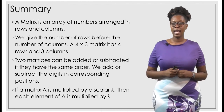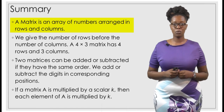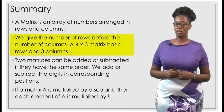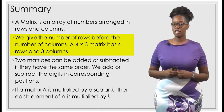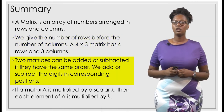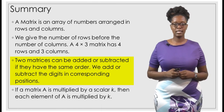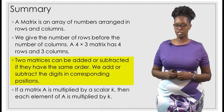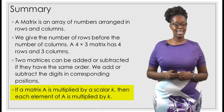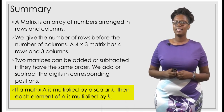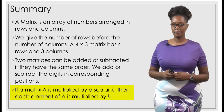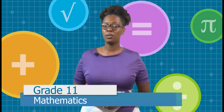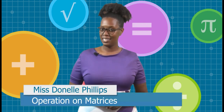To summarize today's lesson: a matrix is an array of numbers arranged in rows and columns. We give the number of rows before the number of columns, so a 4 by 3 matrix has 4 rows and 3 columns. Two matrices can be added or subtracted if they have the same order, adding or subtracting digits in corresponding positions. If a matrix A is multiplied by a scalar K, then each element of A is multiplied by K. My name is Ms. Donnell Phillips — see you next time.